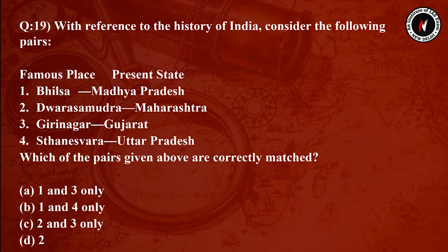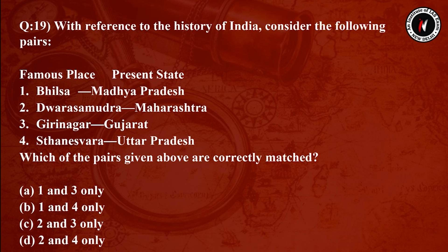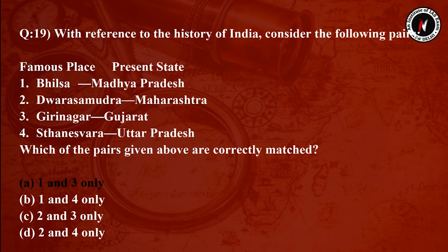Option A: 1 and 3 only. Option B: 1 and 4 only. Option C: 2 and 3 only. Option D: 2 and 4 only. The answer is Option A — 1 and 3 only.